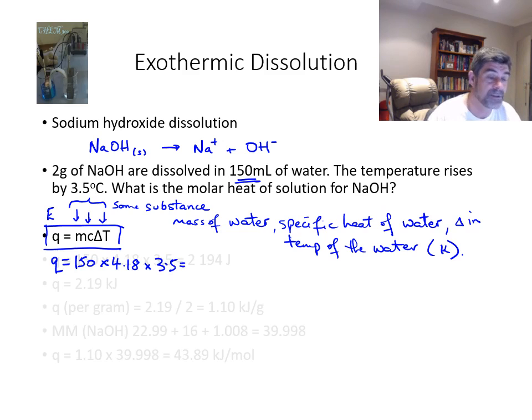And the change in temperature is 3.5. It's gained 3.5 degrees C. And because when we're talking about a change in the temperature, the Kelvin scale and the Celsius scale go up by the same amount, the difference is the same. This gives me a value of 2,194 joules. Now I'm going to convert this into kilojoules, so that's 2.19 kilojoules.